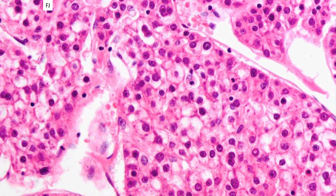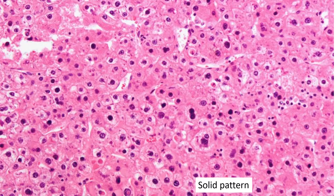As a baseline, this is what a classic hepatocellular carcinoma looks like: round nuclei, abundant, slightly eosinophilic to pale cytoplasm, often distinct cytoplasmic membranes. So that's our baseline. Pattern number two is a solid pattern — fairly common — with no trabeculae, or no easily discernible trabecular architecture.